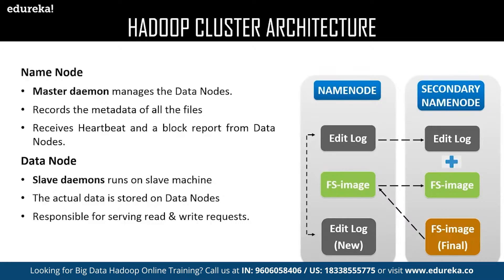The Name Node is responsible for managing the health of all Data Nodes. It receives a heartbeat from all Data Nodes at a particular interval of time and also receives a status update of the assigned task. If any Data Node fails to respond with a heartbeat, the Name Node considers it dead and reassigns the task to the next Data Node. Data Nodes are called slaves of the Name Node and are responsible for storing actual data and sending task and health status to the Name Node in the form of a heartbeat.